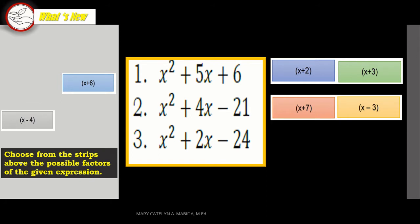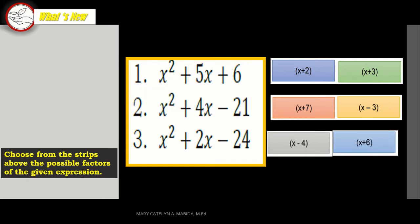Again, you can pause and replay this video as needed. And lastly, number 3: X squared plus 2X minus 24. The factors are X minus 4 and X plus 6. Bravo, ladies and gentlemen!